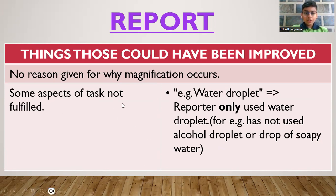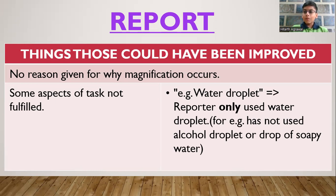Some aspects of the task were not fulfilled. For example, the reporter only used a water droplet for the experiments and has not used an alcohol droplet or a drop of soapy water. According to the theory, magnification changes with different types of droplets — for instance, an alcohol droplet gives less magnification while a water droplet gives more magnification.